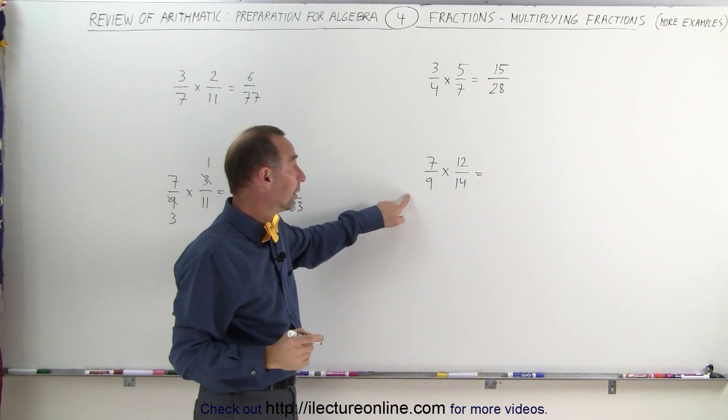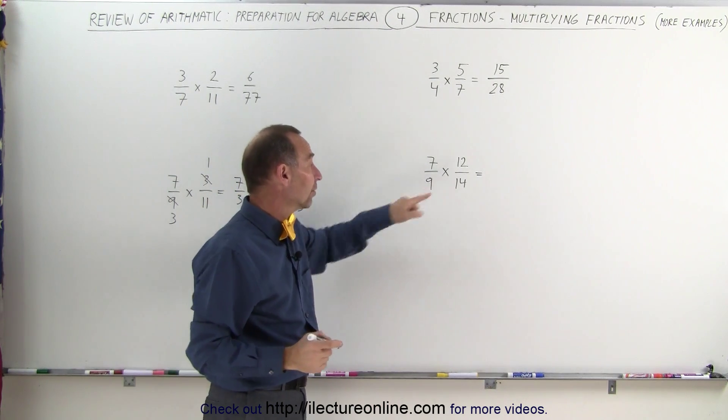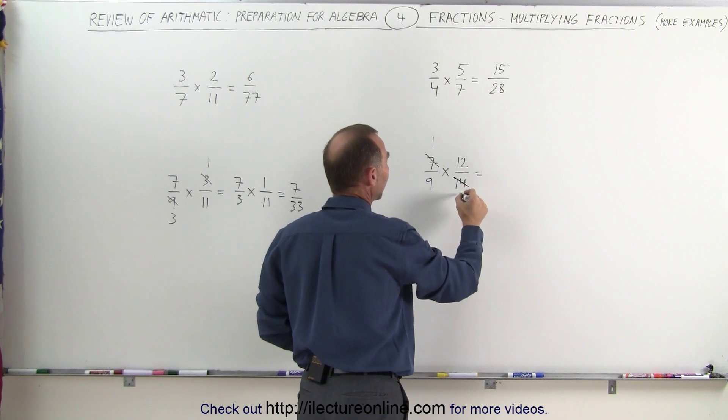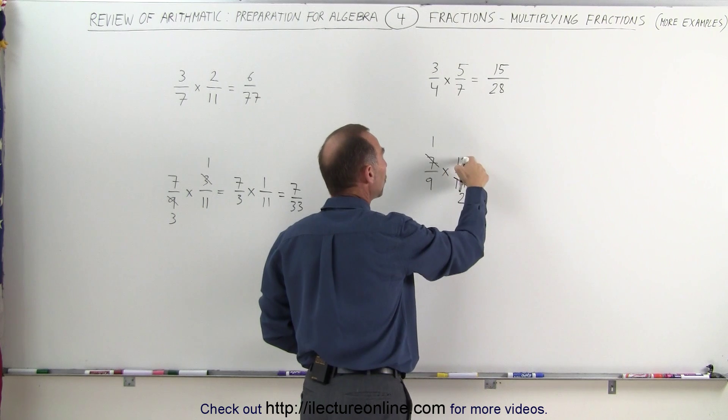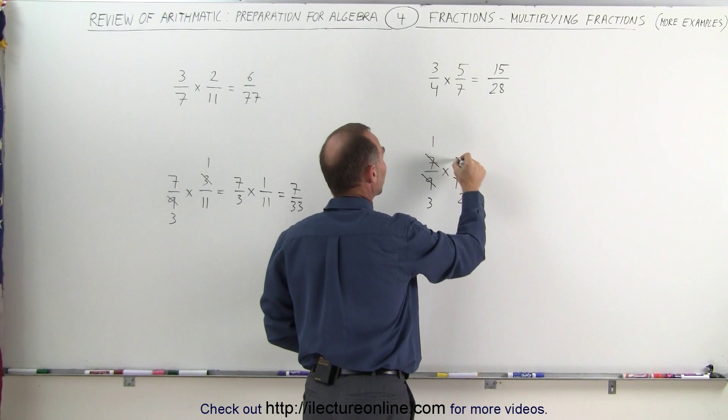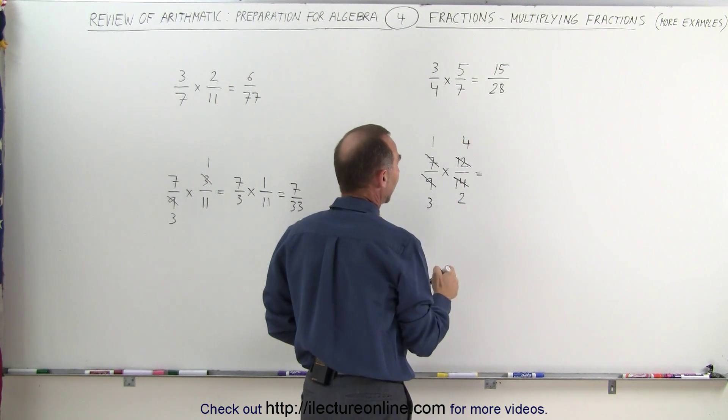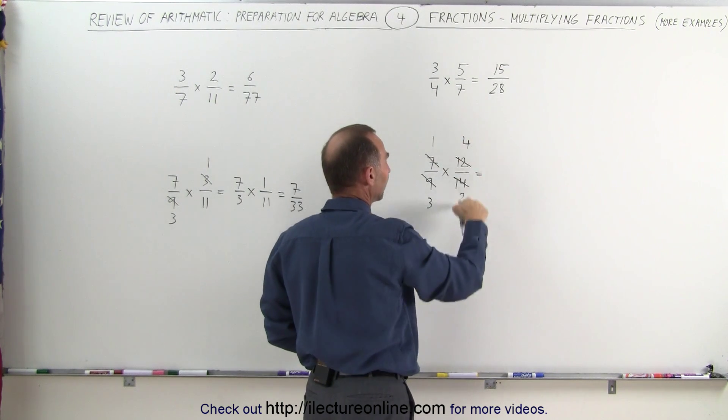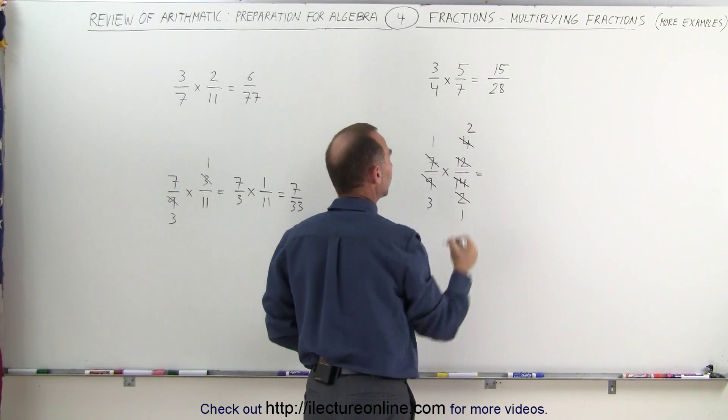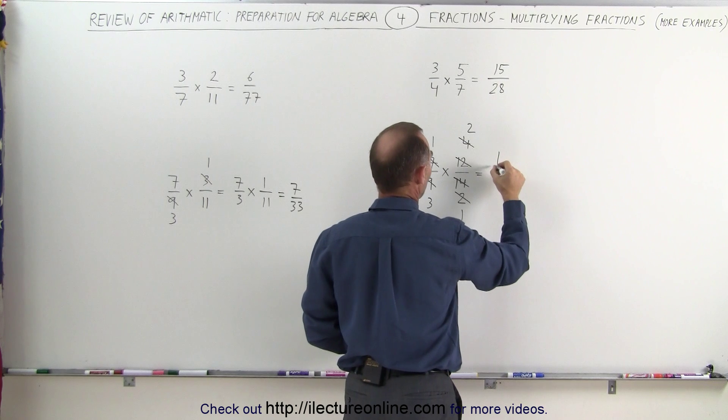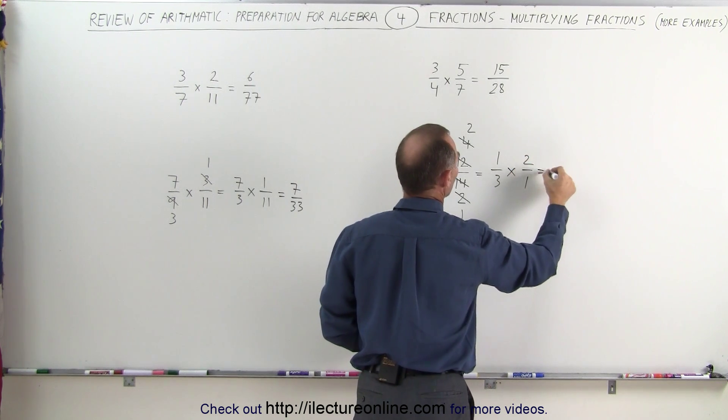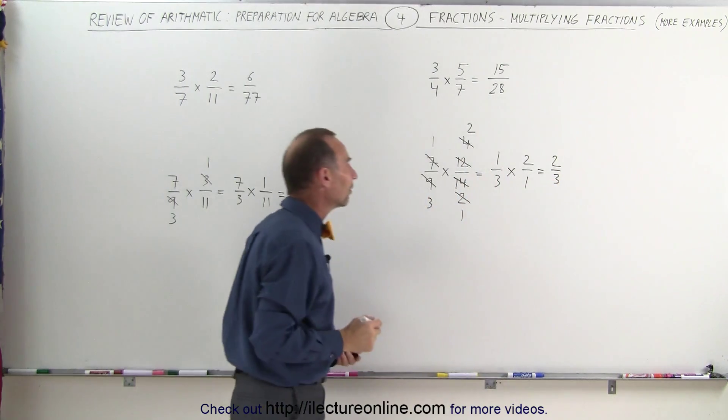On this example here, 7 and 14, you can see that they can be divided by 7. 7 divided by 7 is 1, 14 divided by 7 is 2. And 9 and 12, they're both divisible by 3. 9 divided by 3 is 3, 12 divided by 3 is 4. And then you can see the 2 and the 4, I can divide those both by 2. 2 divided by 2 is 1, 4 divided by 2 is 2, and I'm left with 1 third multiplied times 2 over 1, which is 2 thirds, and that is the final answer.